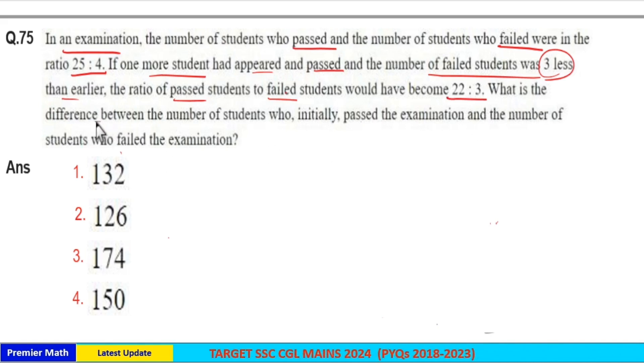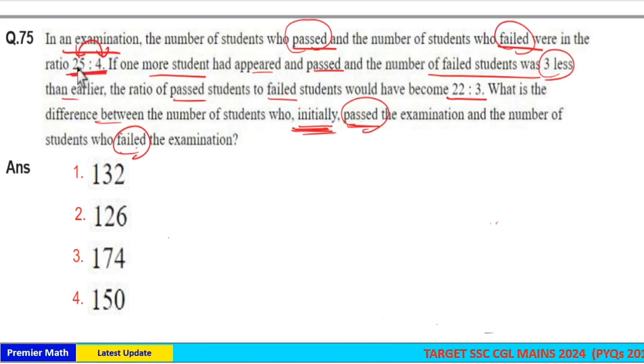What is the difference between the number of students who initially passed the examination and the number of students who failed the examination? We need the initial difference between passed and failed students. Here initial ratio of passed and failed students is 25 is to 4, which means initial difference is 25 minus 4, equal to 21. Your answer should be a multiple of 21, so check for multiples of 21 in the options.